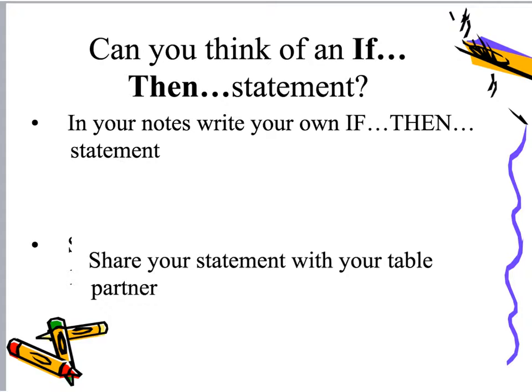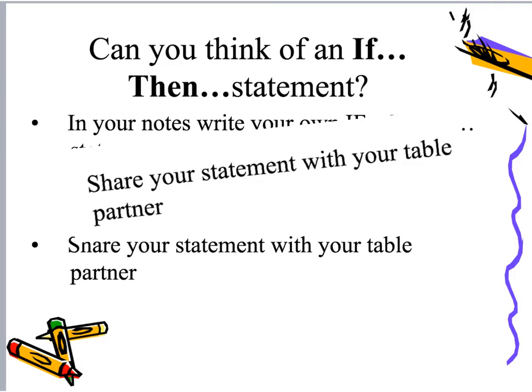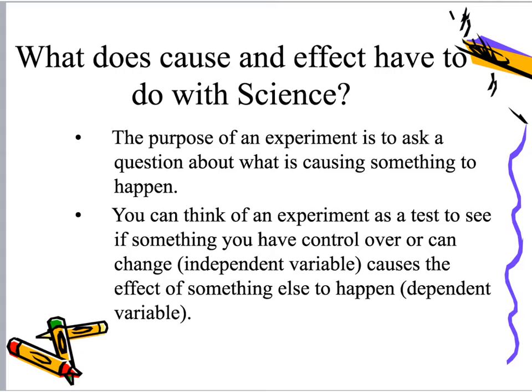Now that you have your if-then statements, go ahead and share your statement with your table partner or elbow partner. You're each going to sit there and share your if-then statements. You might ask the question: what does cause and effect actually have to do with science? The purpose of an experiment is to ask a question about what is causing something to happen, so we can do experiments to determine what is causing an effect to take place.